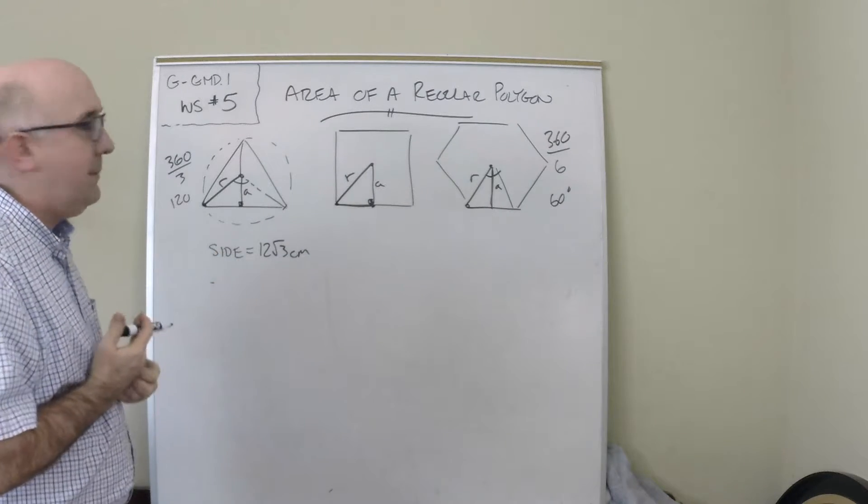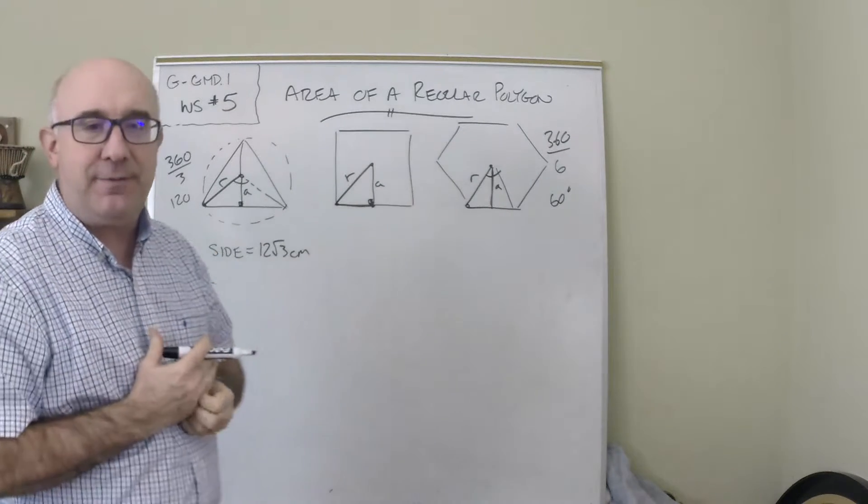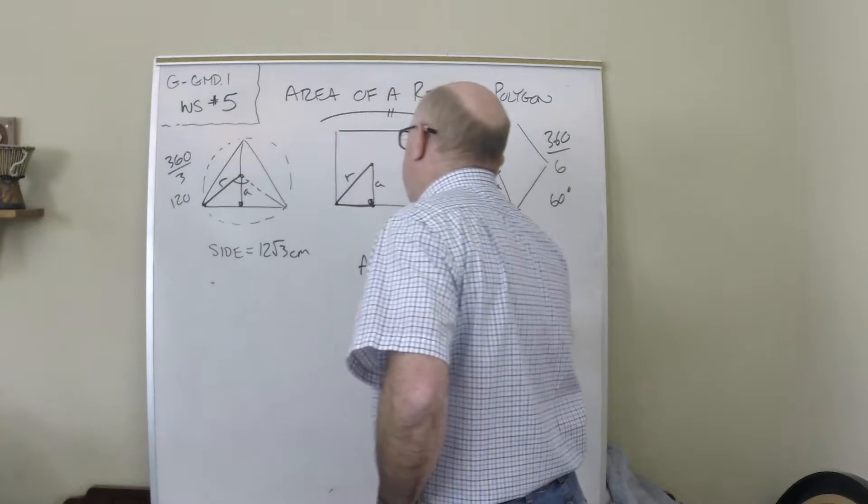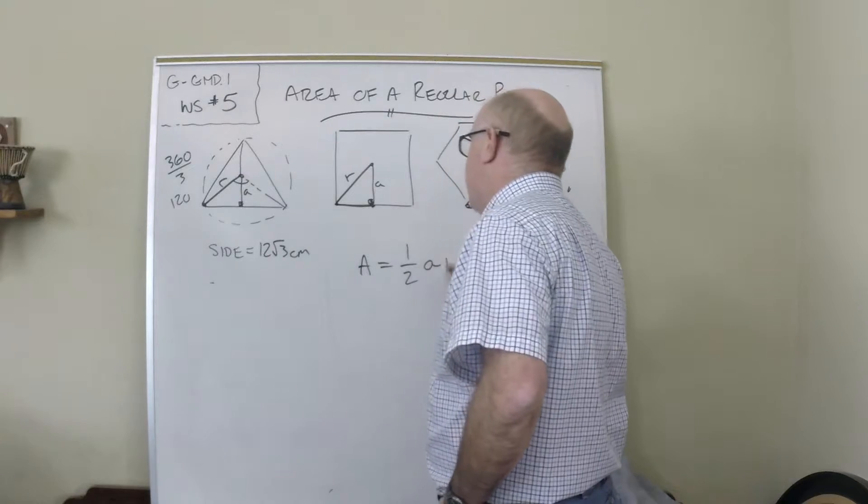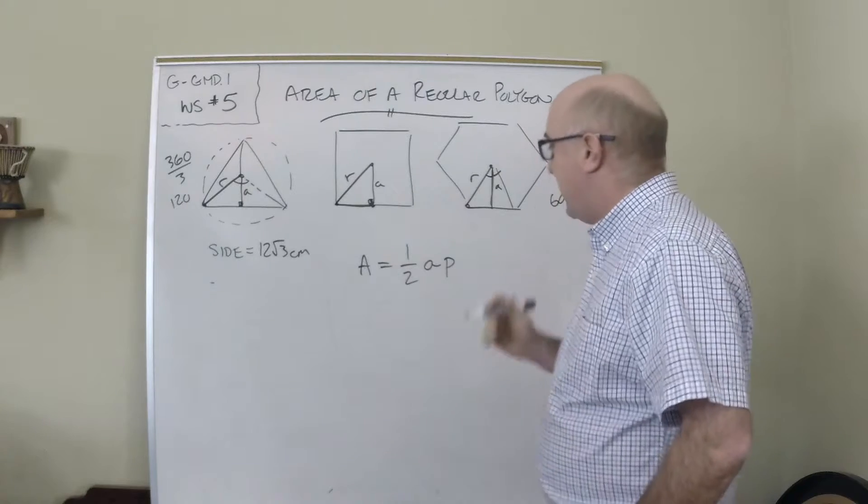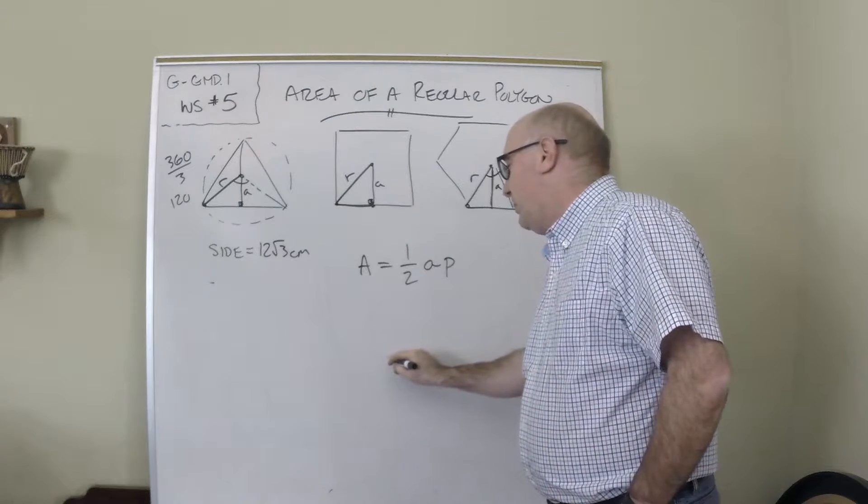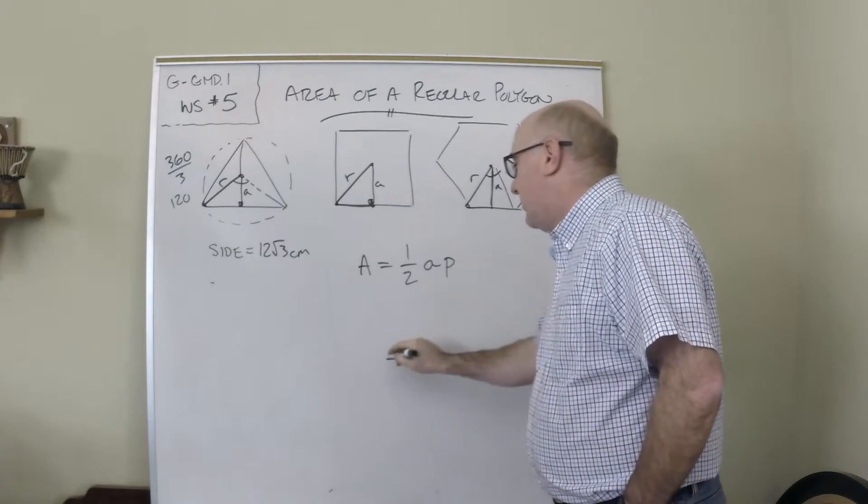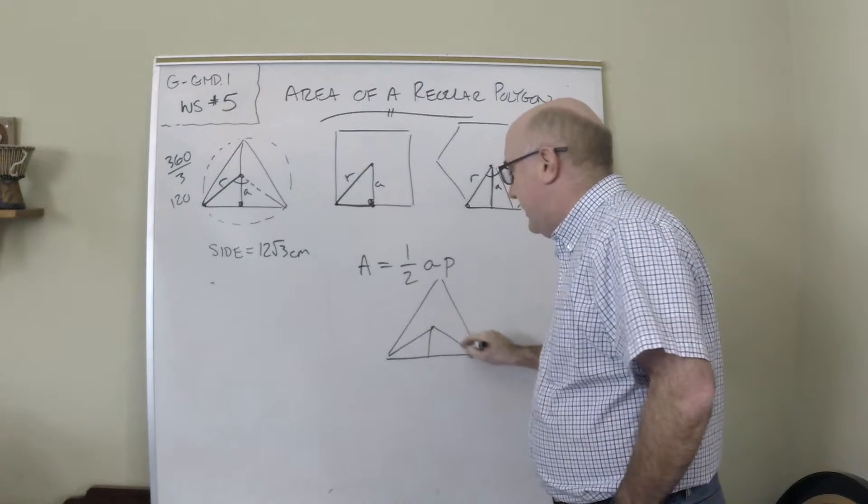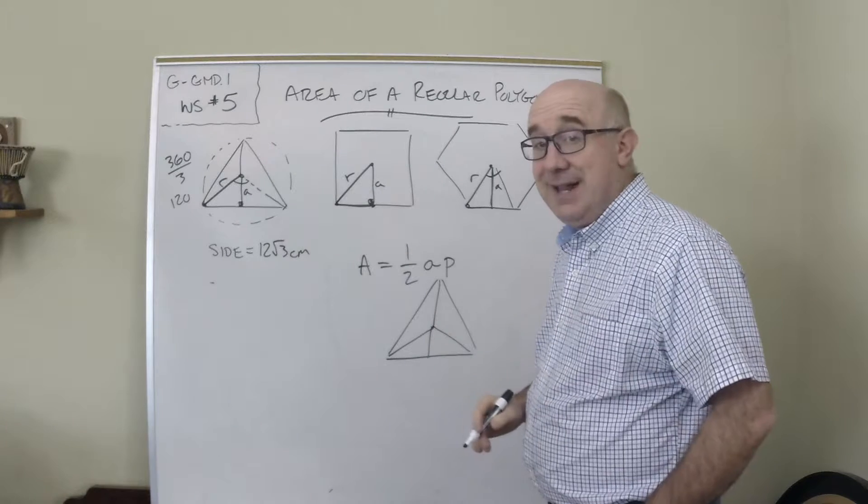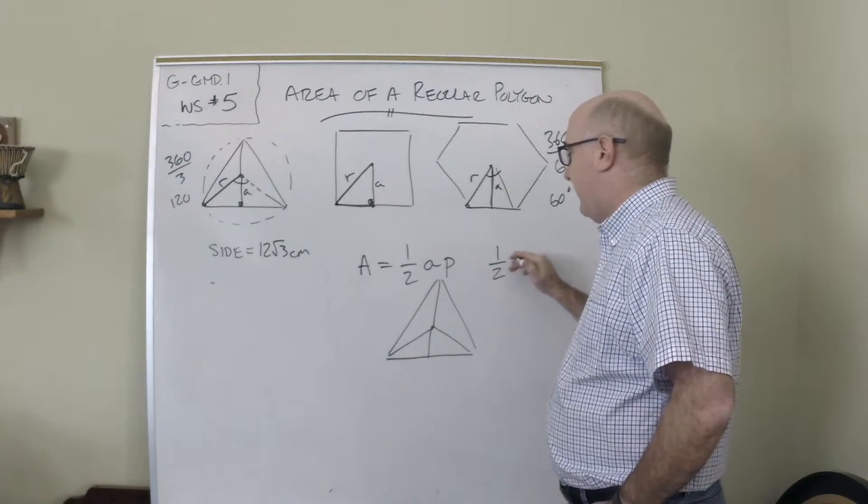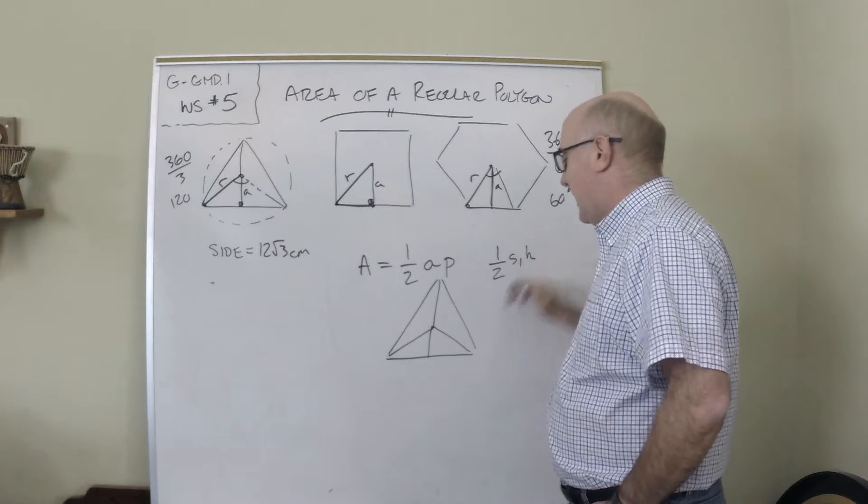Let me speak briefly about the area formula before I get to a specific example. The area formula of these is one-half the apothem times the perimeter. The idea behind that is that when you have a regular polygon, let's say the one we're about to do, you actually have three identical triangles.